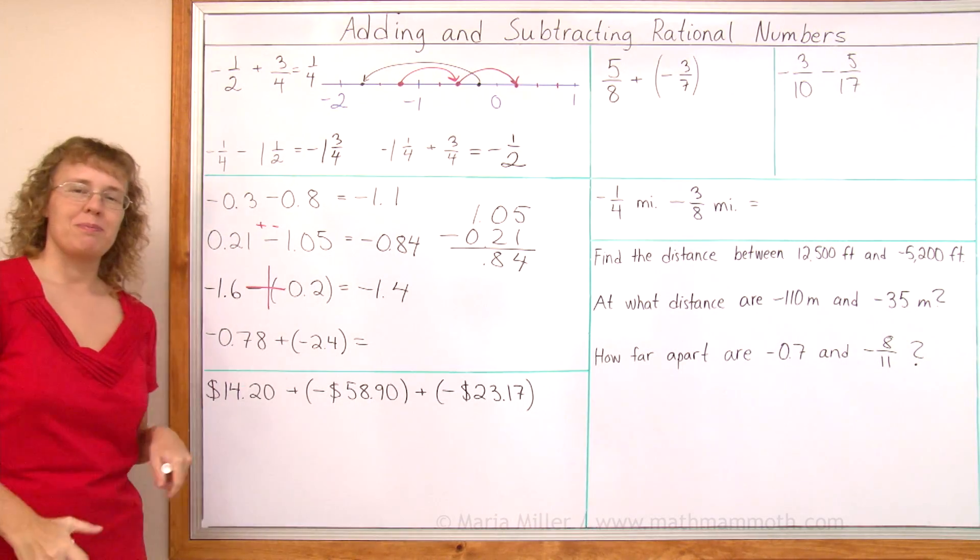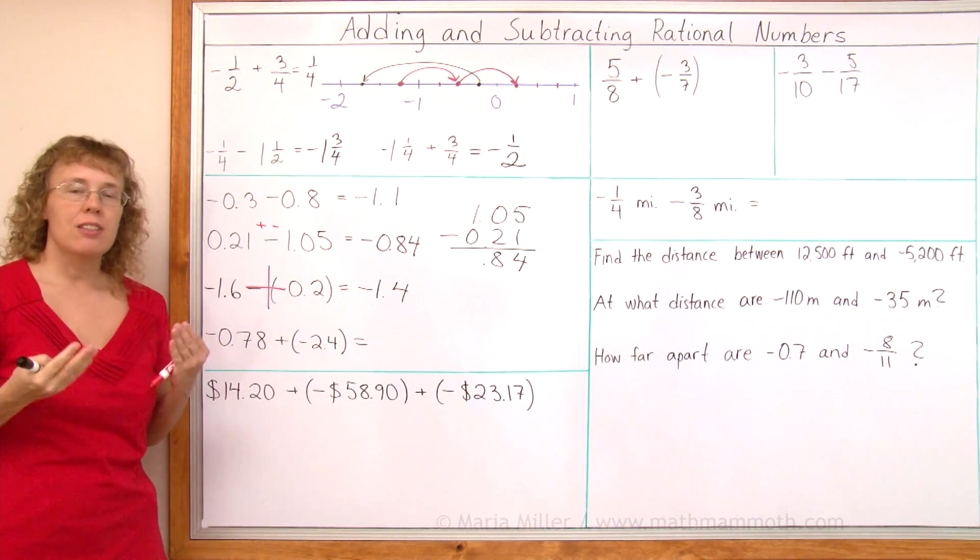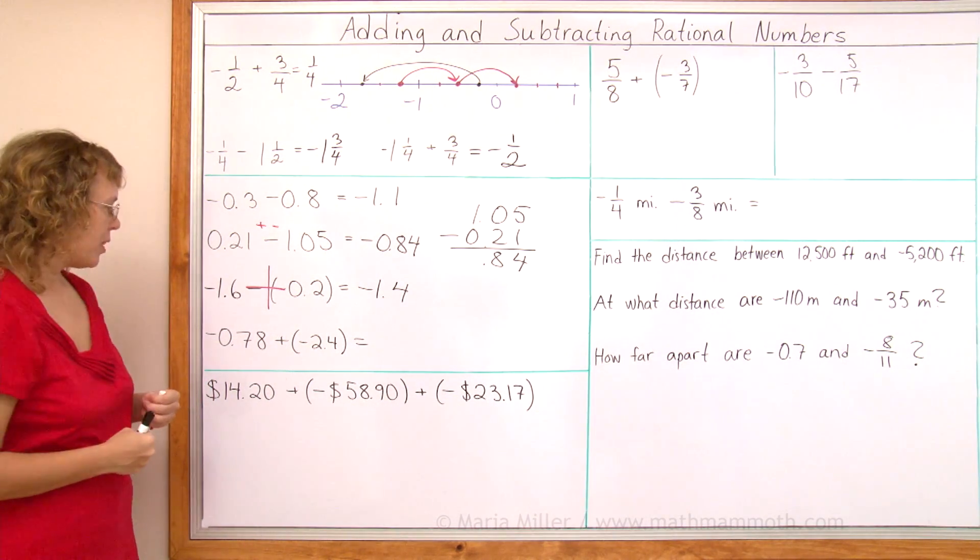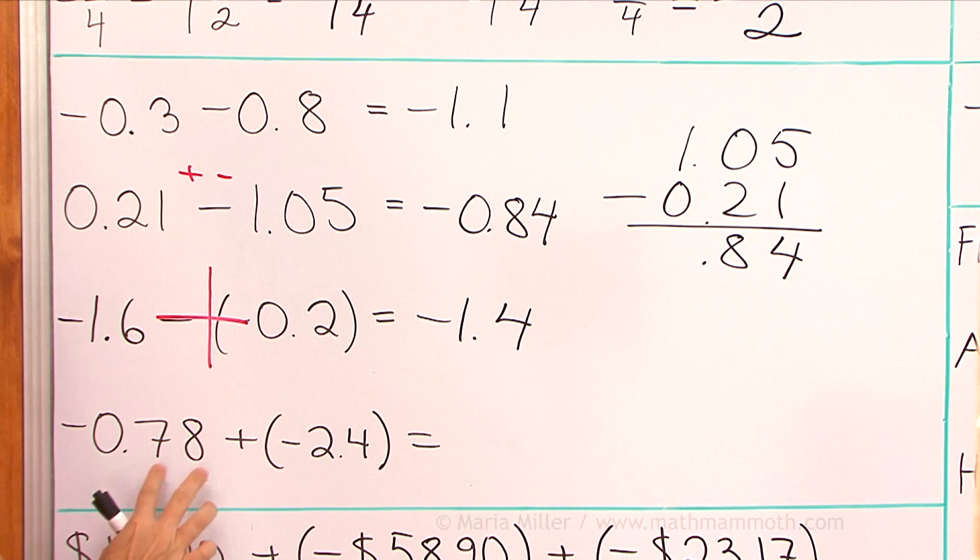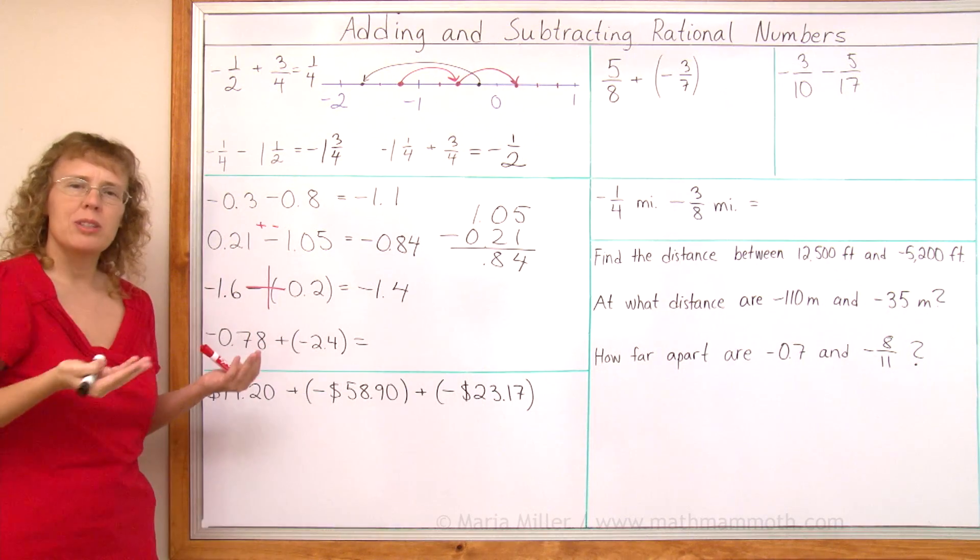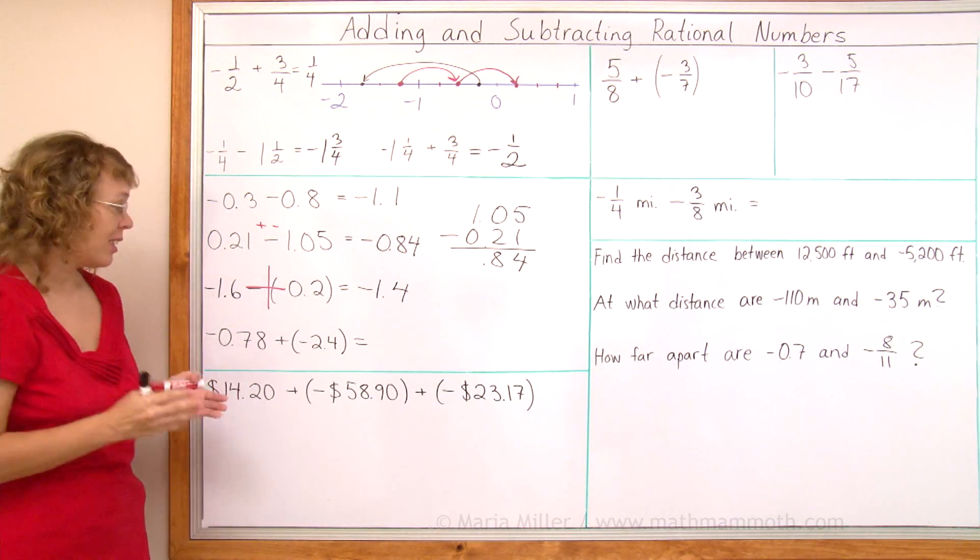This last one. Do you know how to do that? Just think of your integer addition. If this was saying negative 78 plus negative 2, how would you do it? And do it the same way when it is decimals.